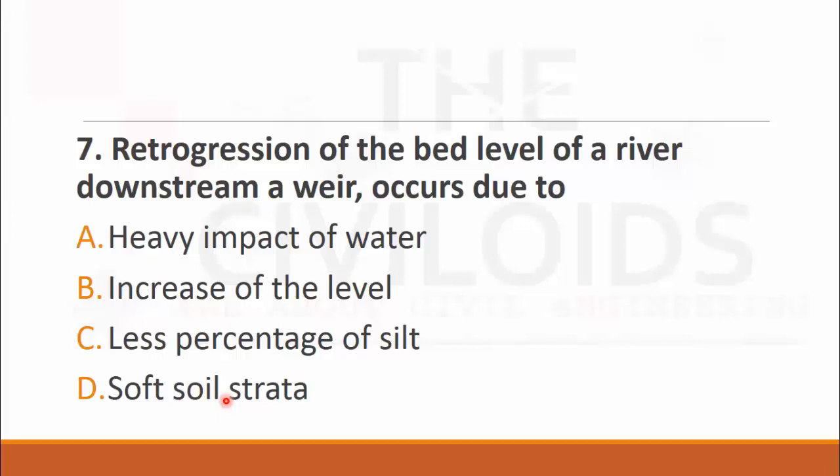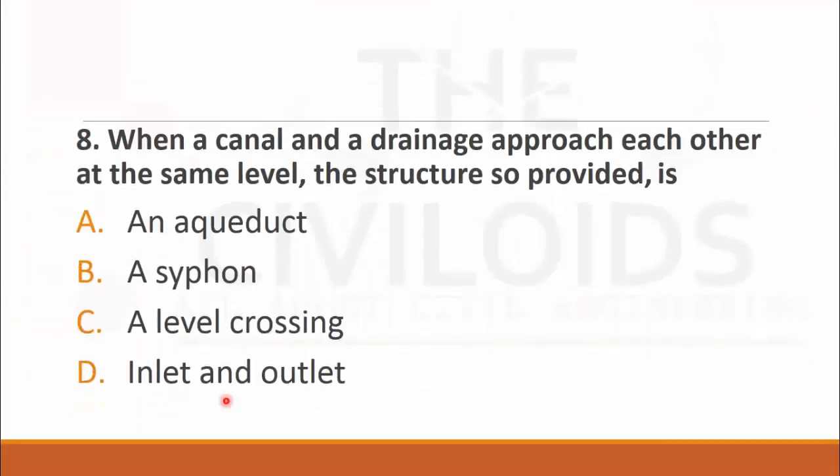MCQ number eight from irrigation engineering: When a canal and a drainage approach each other at the same level, the structure provided is. The choices are: A. aqueduct, B. siphon, C. a level crossing, and D. inlet or outlet. The right choice is C. level crossing.